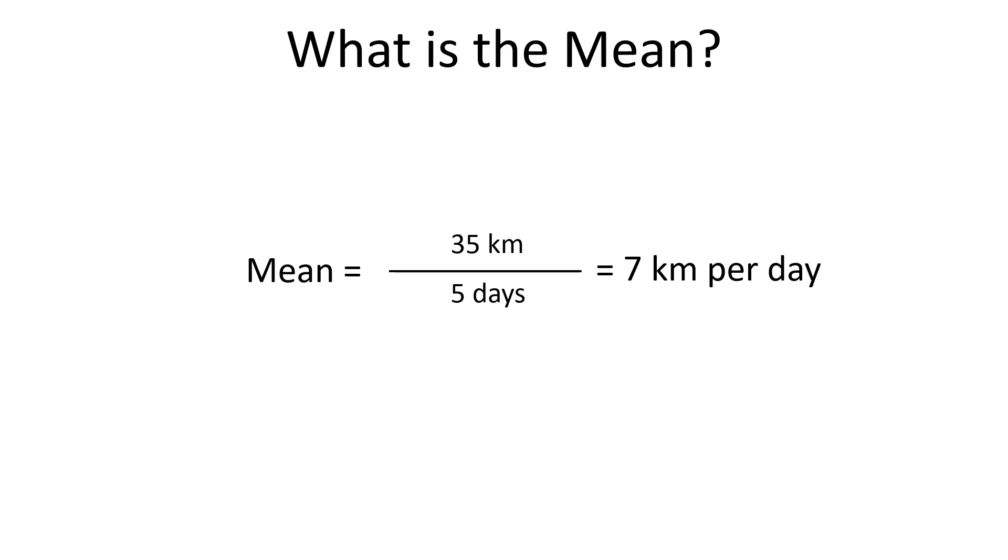What it means is that the ant walks 7 kilometers per day on average in our example.